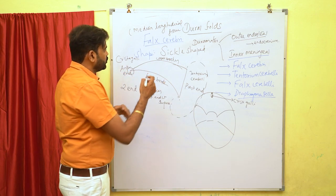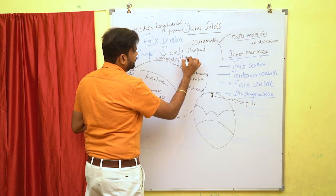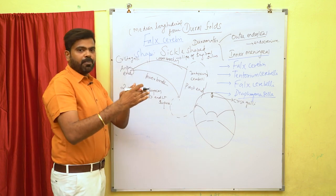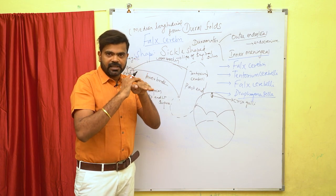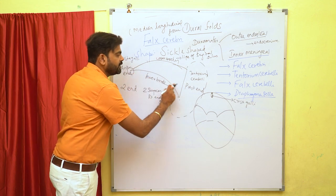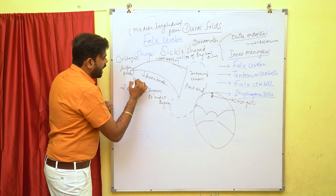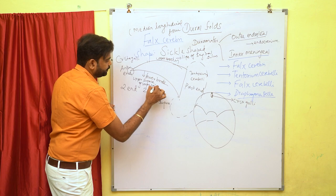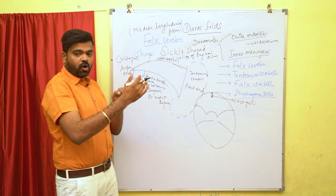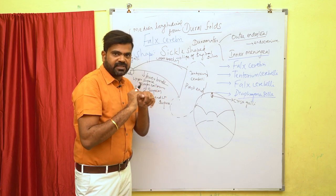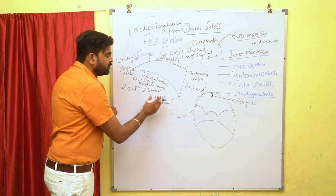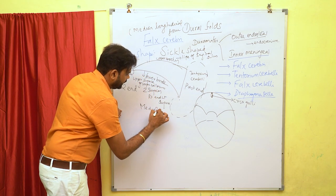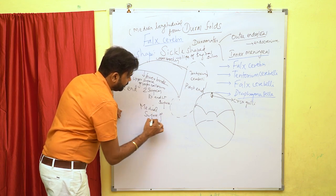The upper border is convex and is attached to the lips of the sagittal sulcus. The lower border is concave and rests on the upper surface of the corpus callosum. The two surfaces — right and left — are related to the medial surface of the cerebral hemisphere.